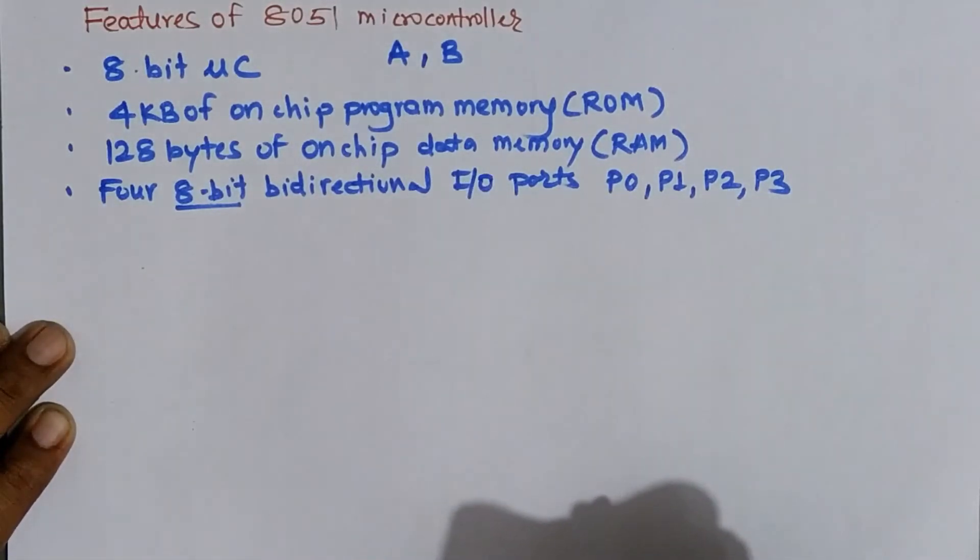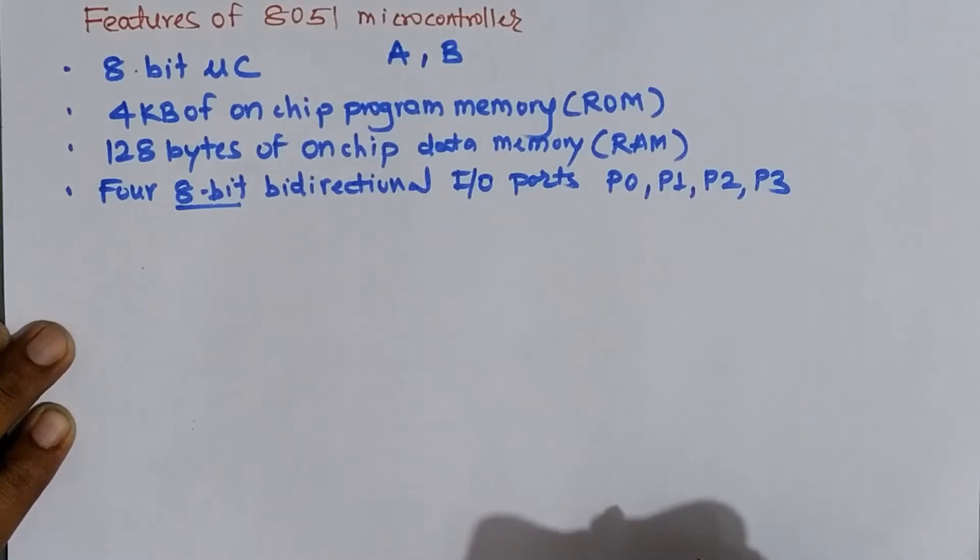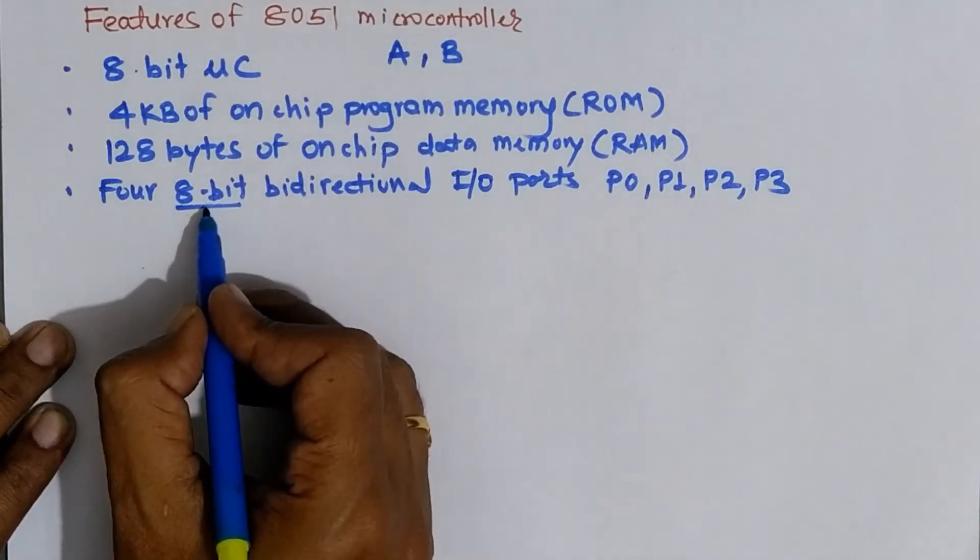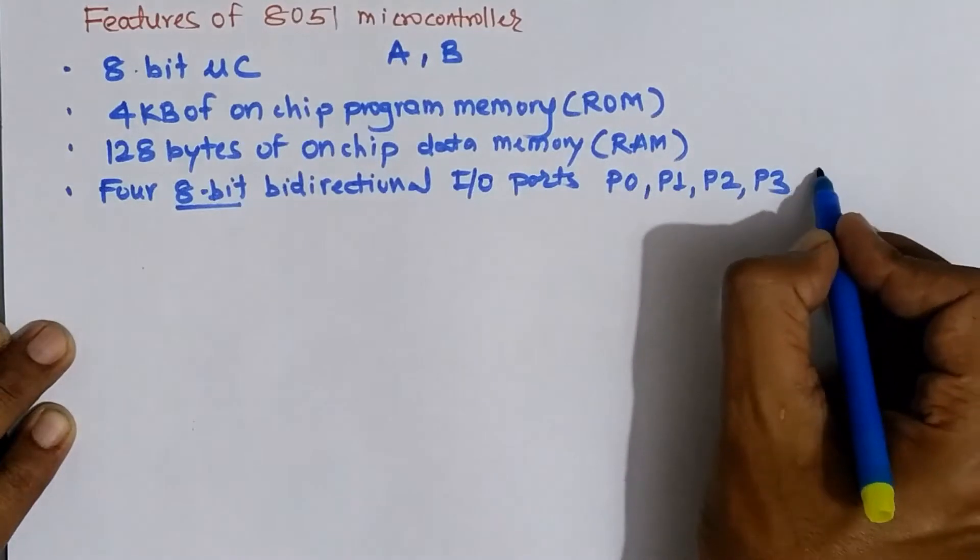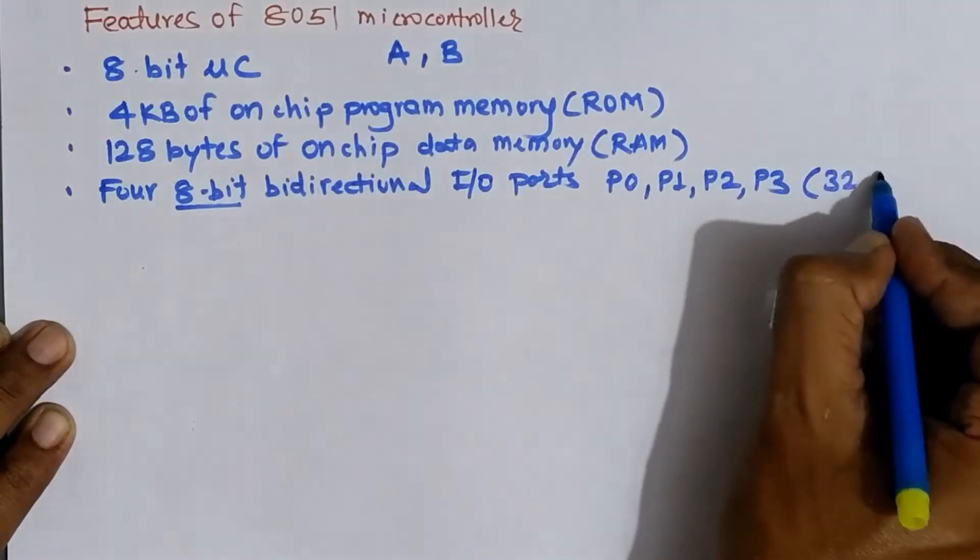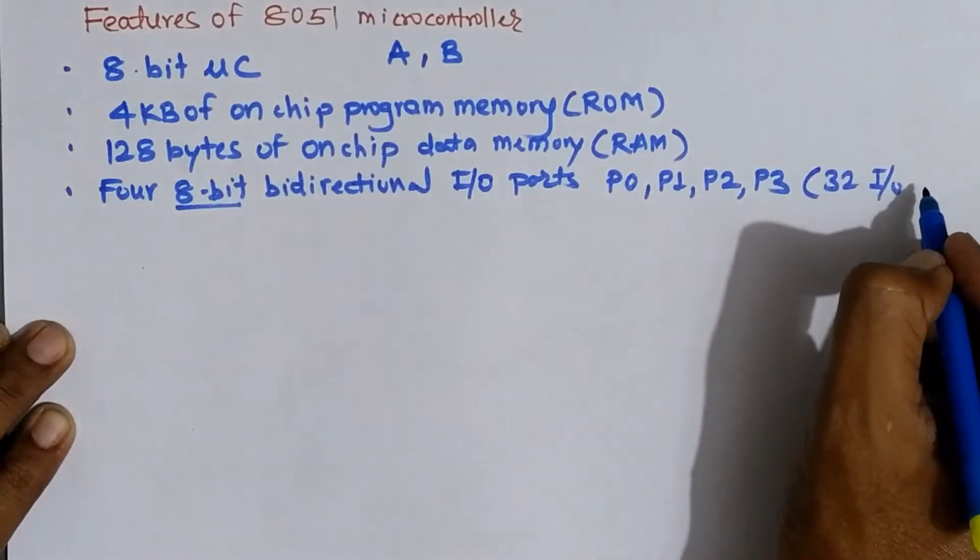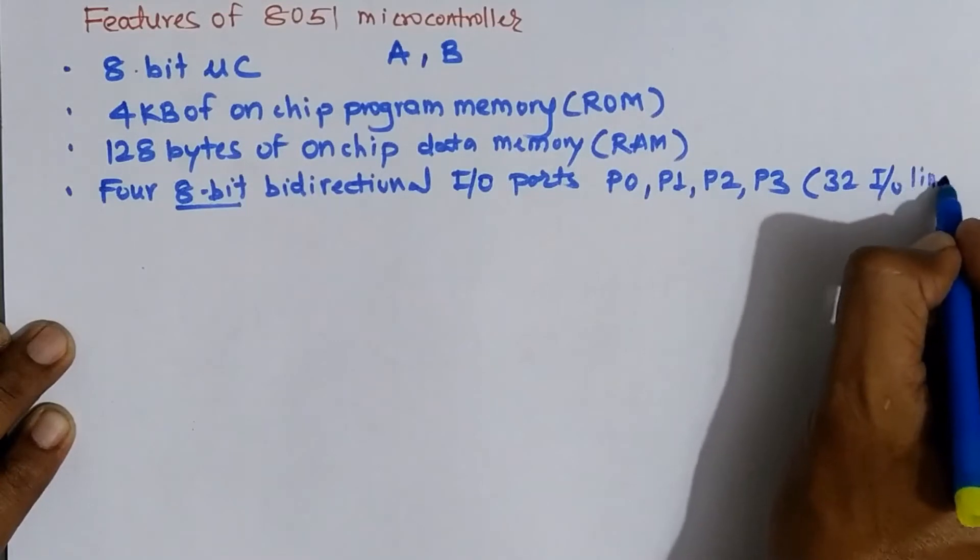I stands for input, O stands for output. As each port is of 8-bit and there are 4 different ports, so I can say that there are 32 IO lines because 4 x 8 comes to be 32.